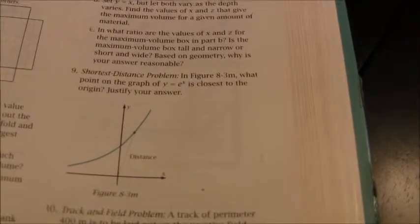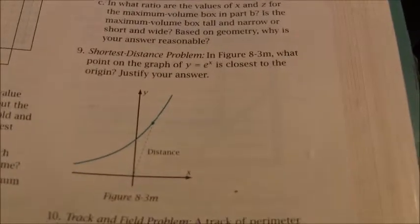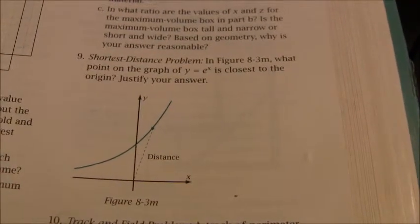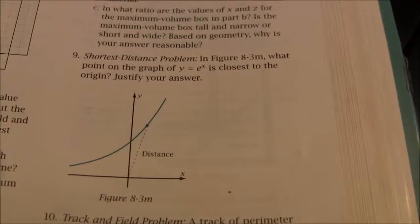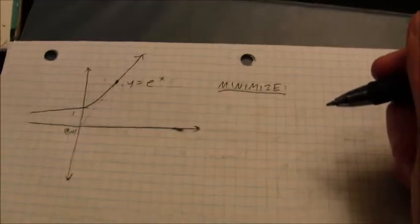I'm going to take a look at a problem. In this problem I need to find the minimum distance from a point on the graph of y equals e to the x from the origin. And so as usual I want to minimize a function here. And the function is going to be a distance.